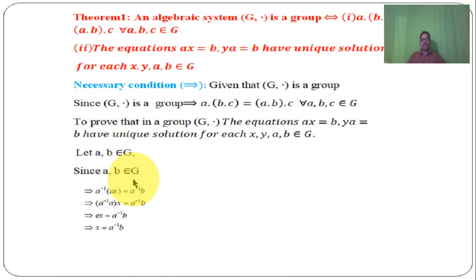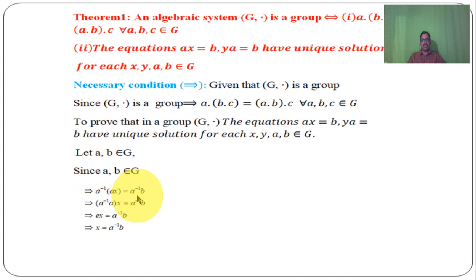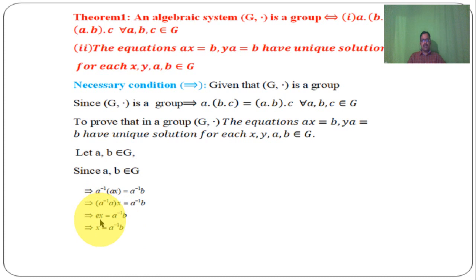Since A, B belongs to G, consider the first equation AX equal to B. Multiplying both sides on the left by A inverse: A inverse into AX equal to A inverse into B. By associative law, (A inverse into A) into X equal to A inverse into B. Since A inverse into A equal to E, we get E into X equal to A inverse into B, so X equal to A inverse into B.